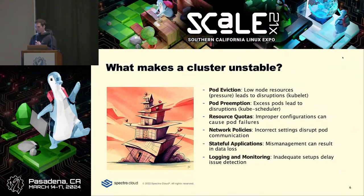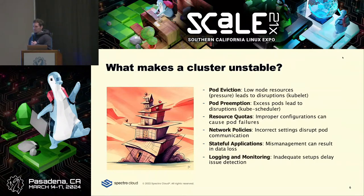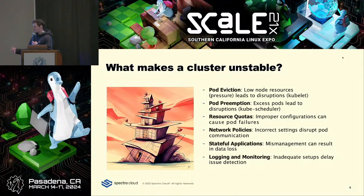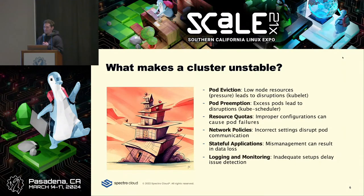Network policies are another double-edged sword. If there are constraints around which pods should be talking to which other pods, network policies are how you do that. The default in Kubernetes is that everything can talk to everything else, which is fine in dev. But if you're trying to achieve any sort of segregation, you end up implementing these. Anyone who's dealt with a misconfigured network policy knows they can be tricky to debug, and when things stop talking to each other, that leads to instability.